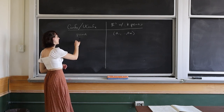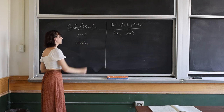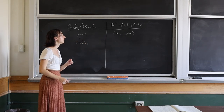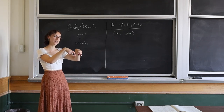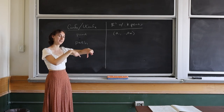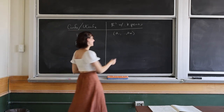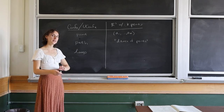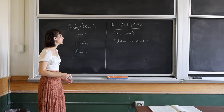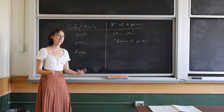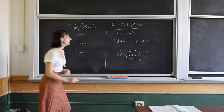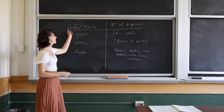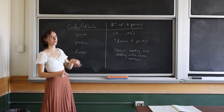We also have paths: if you start at one point in the configuration and then make a continuous path to another point, that corresponds to taking all K points in the downstairs plane and moving them all around at the same time. We're going to call this a dance of the points. More specifically, we can have a loop — a path which starts and ends at the same point. In the downstairs space, that corresponds to a dance which starts and ends in the same position. Whether that position is exactly the same or the same up to permutation depends on whether we're looking at the ordered or unordered configuration space.